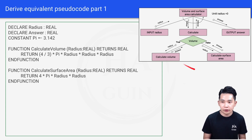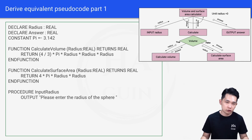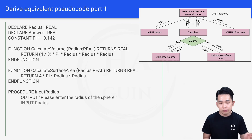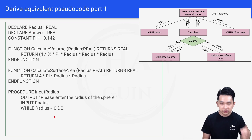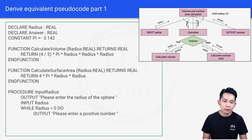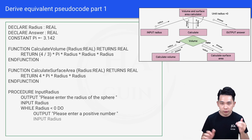Now let's do the Input Radius module. PROCEDURE inputRadius — we are not returning anything, so we use a procedure. Output: 'Please enter the radius of the sphere.' Then INPUT radius, storing the value into the radius variable declared at the top. WHILE radius < 0 DO: OUTPUT 'Please enter a positive number', then INPUT radius again — this handles negative inputs. Then ENDWHILE and END PROCEDURE.